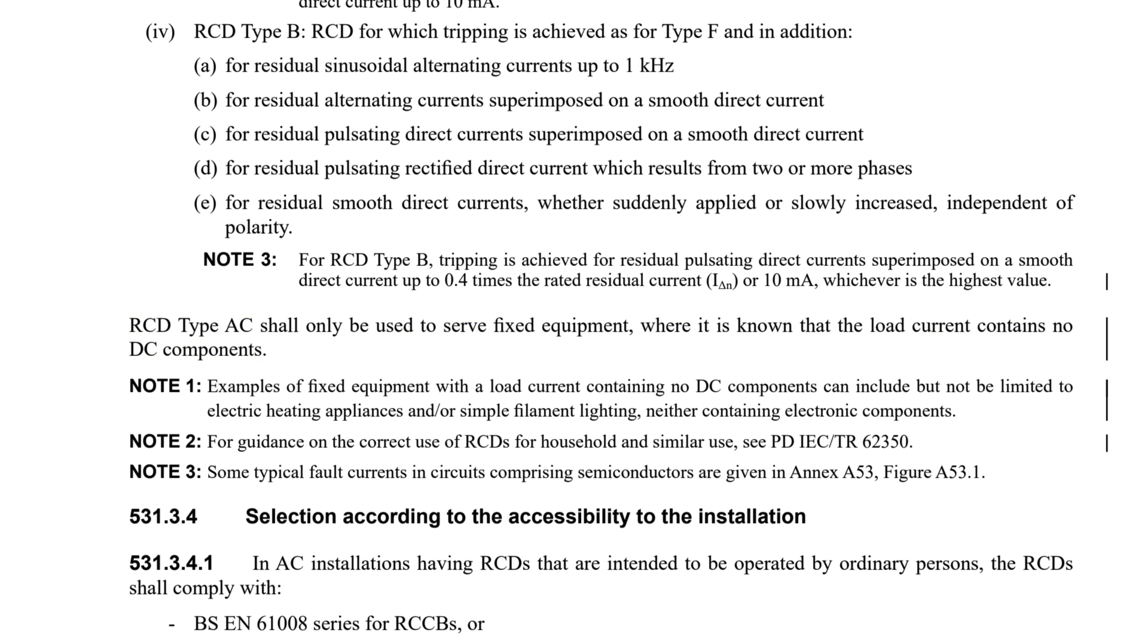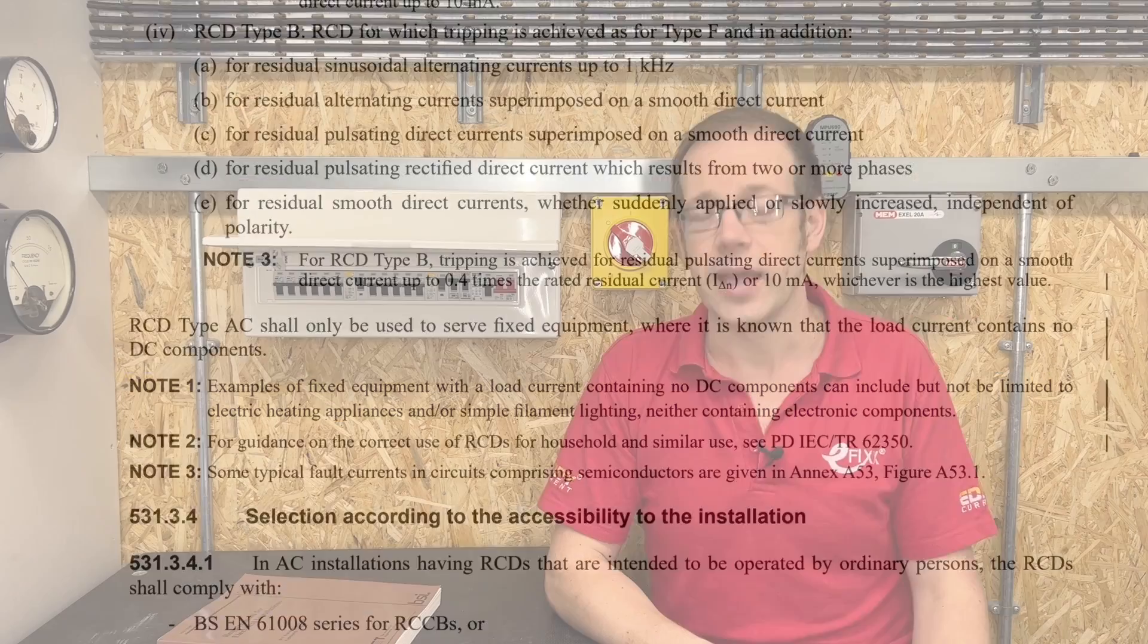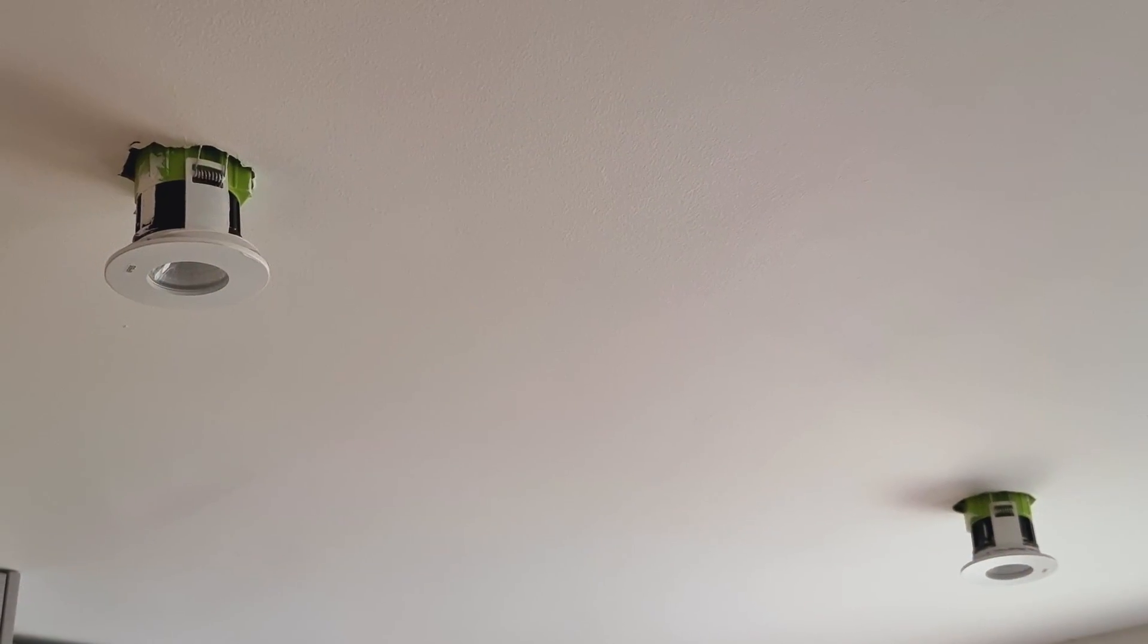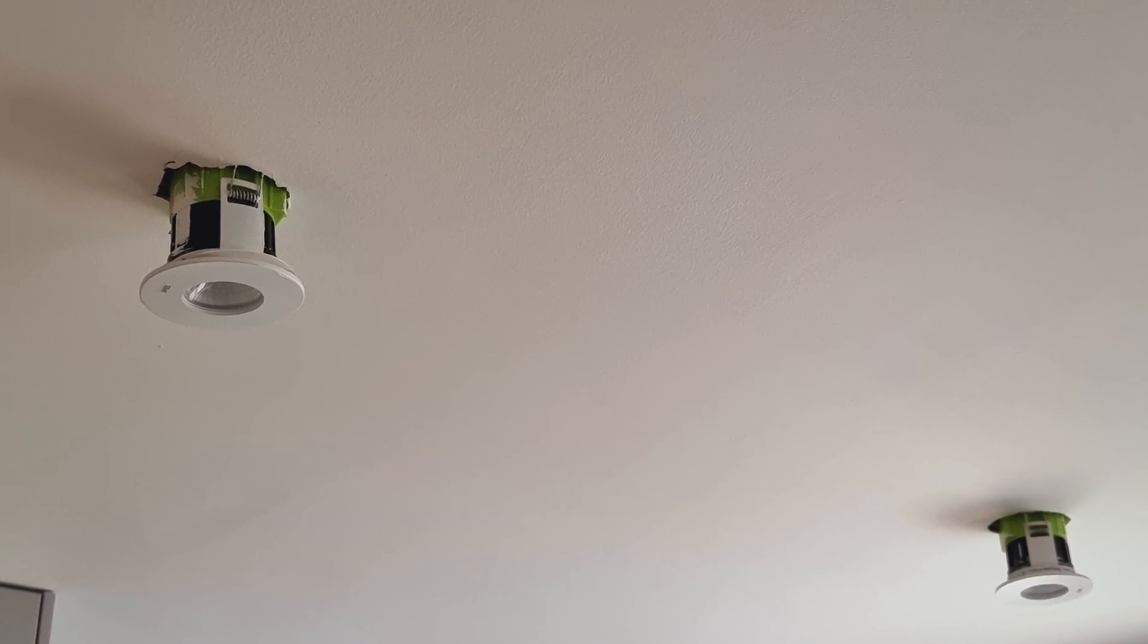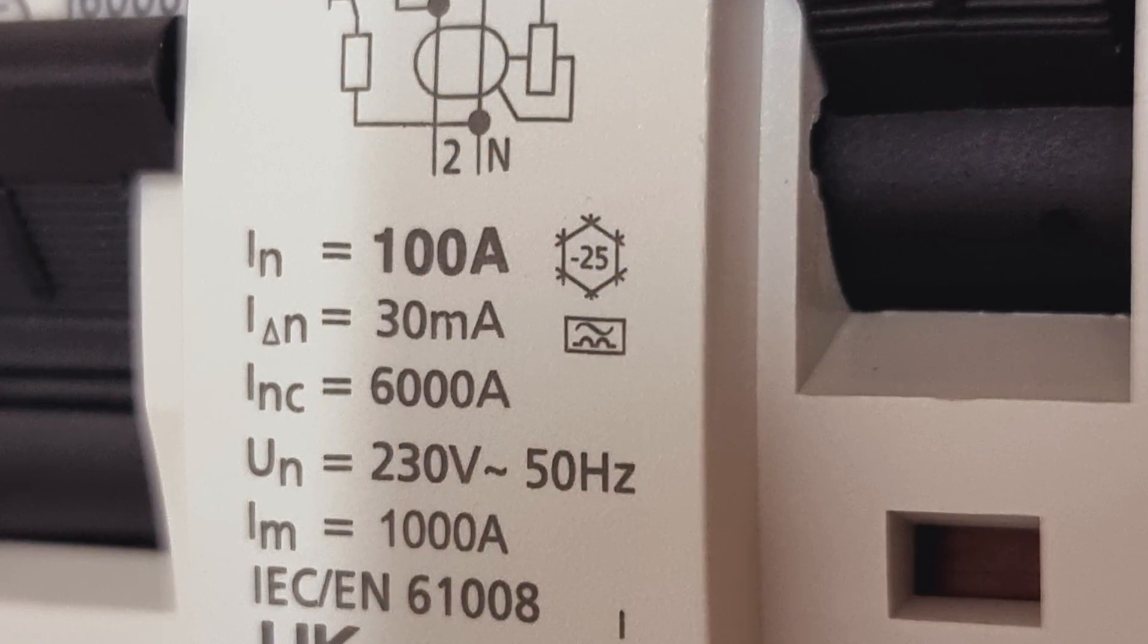Note 1 just below adds further insight as to just what an AC type RCD can be used on, where it says, examples of fixed equipment with a load current containing no DC components can include, but not be limited to, electric heating appliances and or simple filament lighting, neither containing electronic components. As you can imagine, in this day and age where the simplest heater may well incorporate digital controls or lighting will be based on LEDs, it seems that the type AC RCD may well be breathing its last, and the base level of RCD protection will be the type A moving forward.